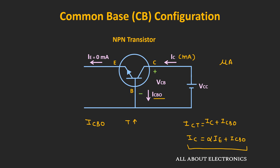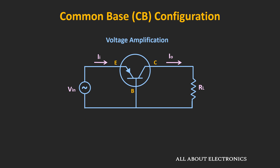Now let's understand how a signal gets amplified in the common base configuration — the DC biasing voltages are not shown here for simplicity. Let's say Vi is the input voltage to be amplified and RL is the load resistor. The input impedance is very low — typically in the range of ohms. With an input impedance of 10 Ω and an input voltage of 5 mV, the input current equals 5 mV ÷ 10 Ω = 0.5 mA.